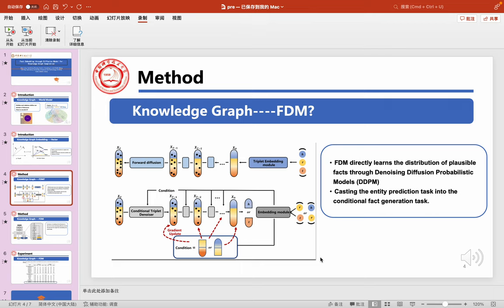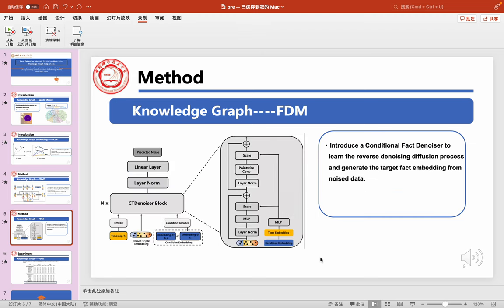This paper argues that the fact comes from a distribution in vector space. Inspired by this insight, this paper proposes a novel framework called Fact-embedding through Diffusion Models, FDM, to address the KGC task.